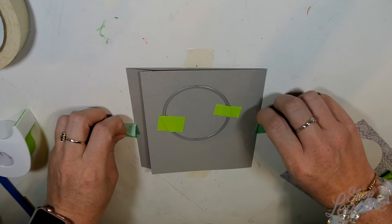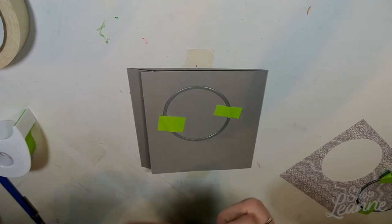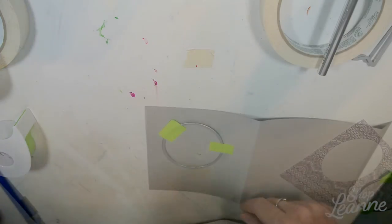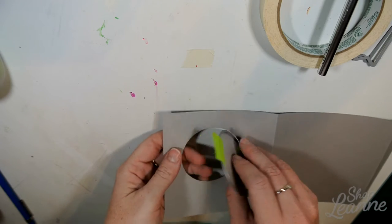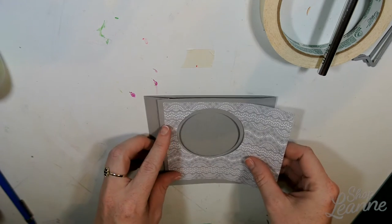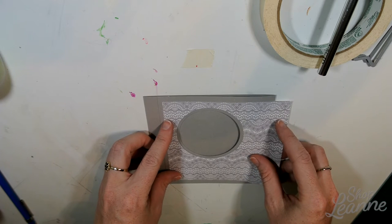I'm just centering the smaller circle die cut where I put the larger circle die cut on the lace paper. I'm going to open it up flat and run it through my die cutting machine. It's only five inches wide so it fits pretty nice.